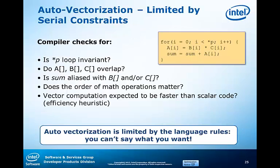The trouble with relying on auto-vectorization is that it is subject to the serial constraints of the language. You really have no way as a developer to express to the compiler what you know about the code. Your a priori knowledge as a developer cannot be conveyed as to whether or not star P is loop invariant, or whether A, B, or C arrays overlap. You have limited ability to indicate that sum is a reduction. The compiler is also forced to be conservative because a store to A sub I could potentially change star P. Auto-vectorization is limited by the language rules.